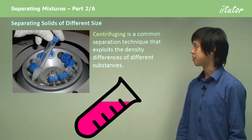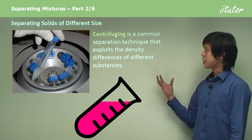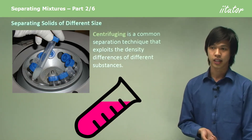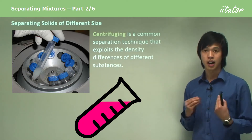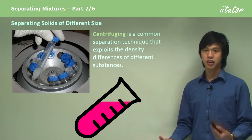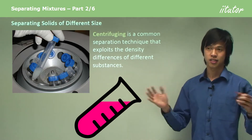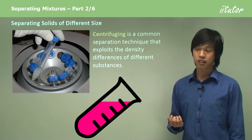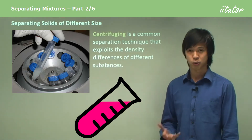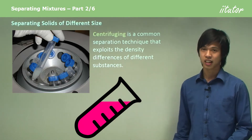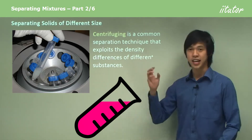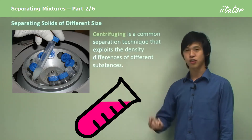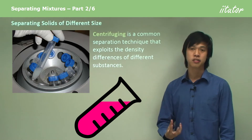Another way to do this is through centrifuging. Centrifuging is a common separation technique that exploits the density differences of different substances — some substances are more dense than others. For instance, air is not very dense; you can walk through it easily. Whereas lead is very dense — you can't run through lead, it doesn't float, it's very heavy.